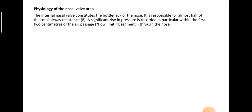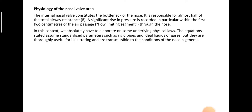The internal nasal valve is the angle between the lower edge of the upper lateral cartilage and the nasal septum — about 20 degrees. It is responsible for almost half of total airway resistance. A significant rise in pressure is recorded in particular within the first two centimeters of air passage, and that is called the flow-limiting segment through the nose. The equations stated assume standardized parameters such as rigid pipes and ideal liquids or gases, but they are useful for illustrating and are transmissible to the conditions of the nose in general.